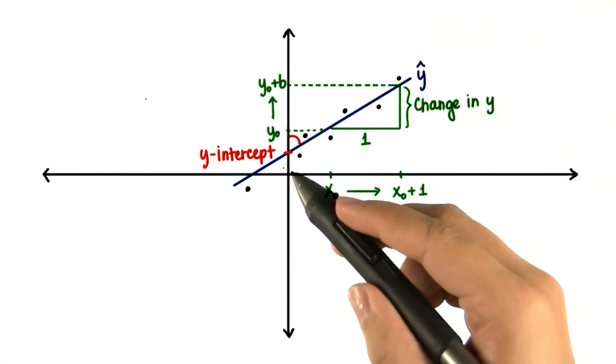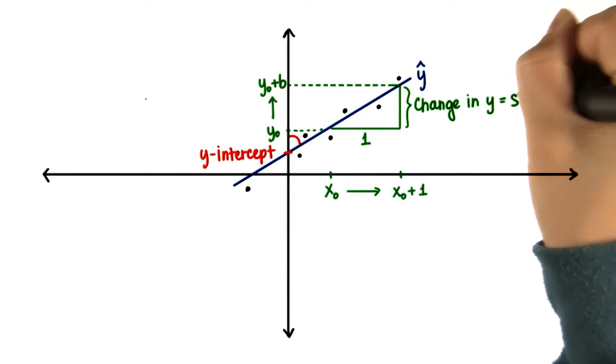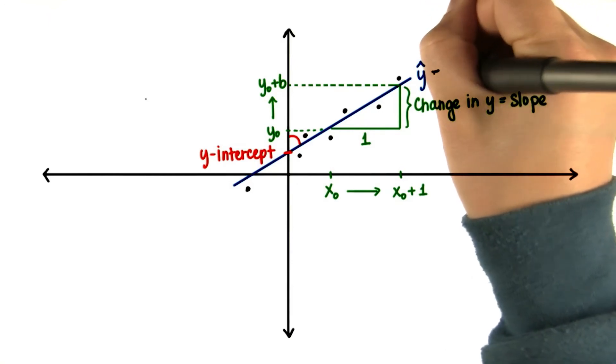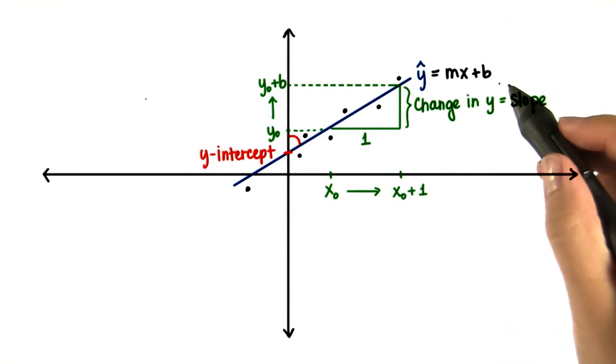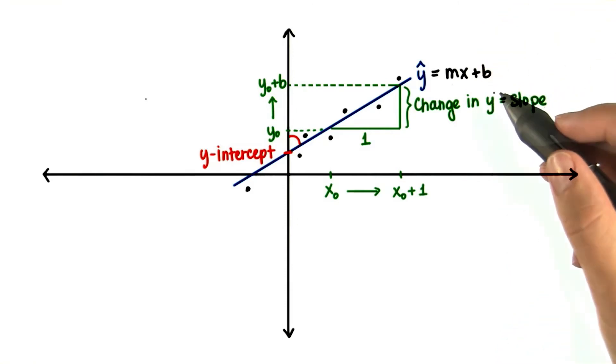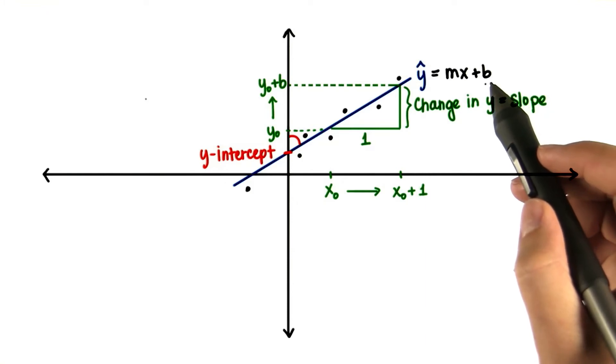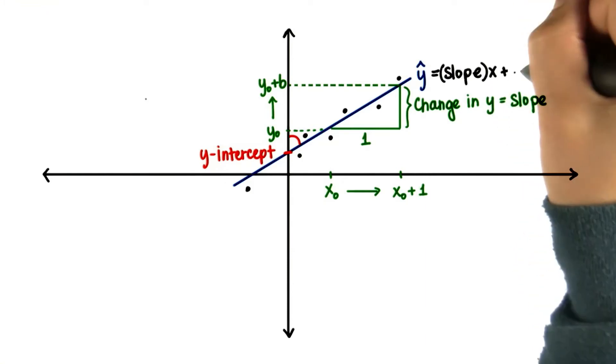There are many ways to symbolize the y-intercept and slope. You may have learned the generic y equals mx plus b, which at least in the United States is usually how it's taught. That's where m represents slope and b represents the y-intercept. But really, we can symbolize them any way we want.